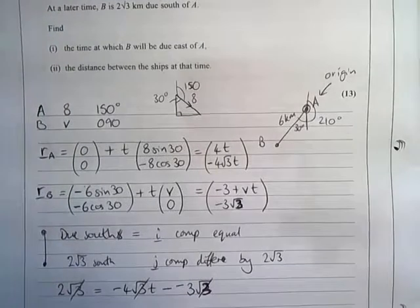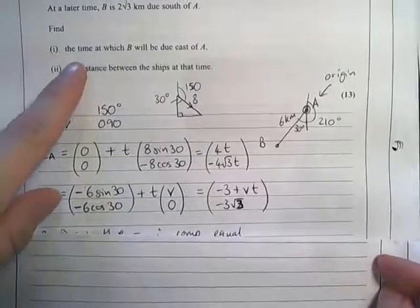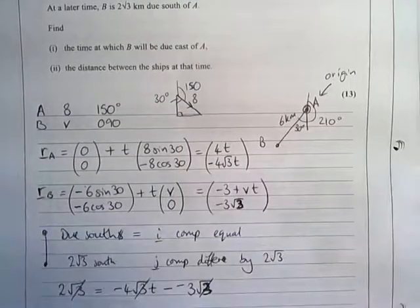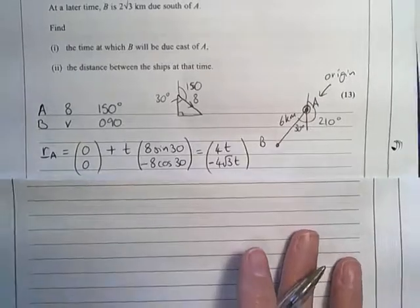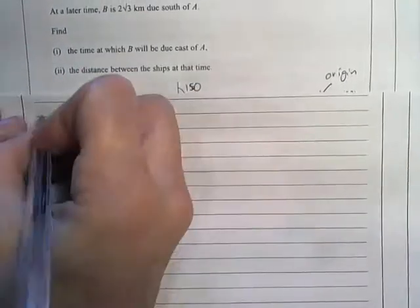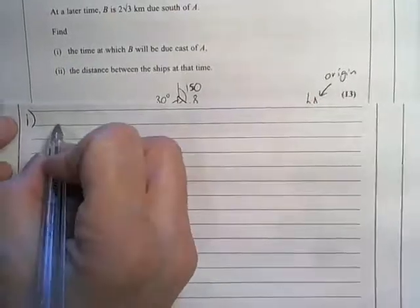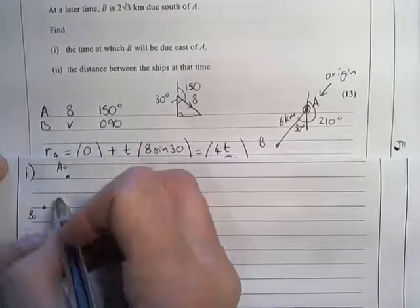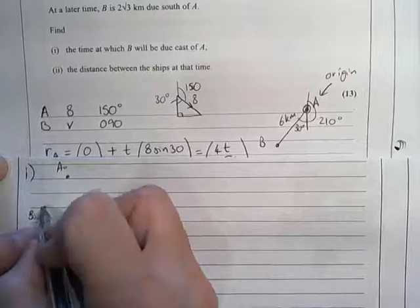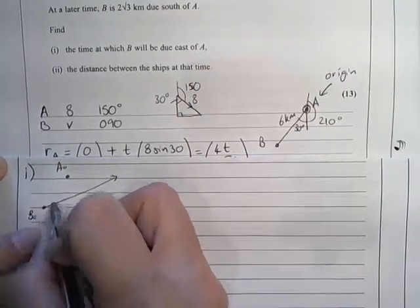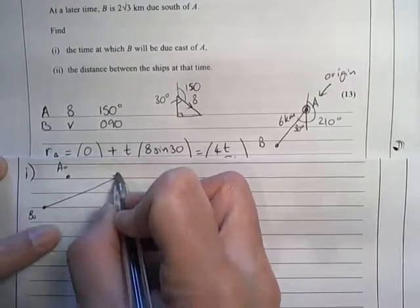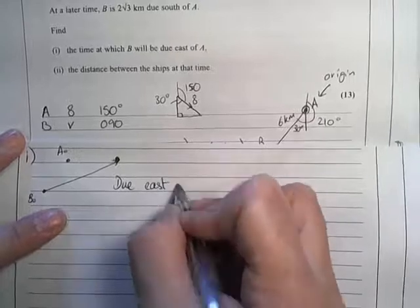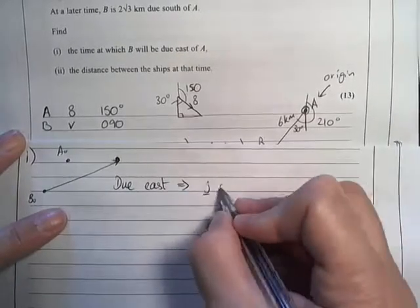So now I'm ready to actually start looking at this different position, which is finding the time when B will be due east of A. The implication of this part of the question, that B will be due east of A, so they began in this position with A here and B here. And then if B ends up being east of A, then B's motion relative to A is going to be along this line, and it's going to end up here, so B will be due east of A.